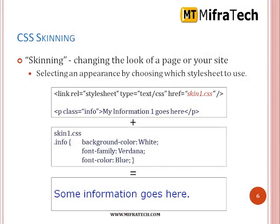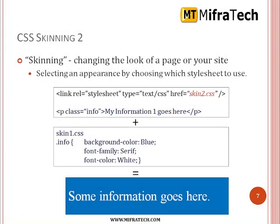Then CSS skinning. Skinning refers to changing the look of a page or your site. When you are writing only HTML code, it is plain text where it will be displayed. When you are writing CSS, you can see an example: we have written a style sheet link related to a style sheet, type text/CSS. The URL is skin1.css. The skin1.css file sets background color white, a font family, and a font color — it is displayed dynamically. You can see the difference between skin1 and skin2 output easily.